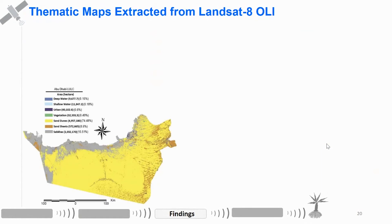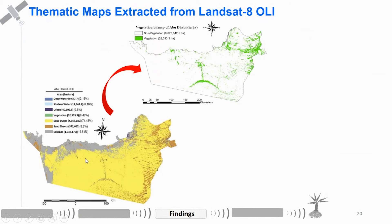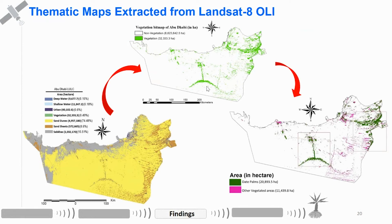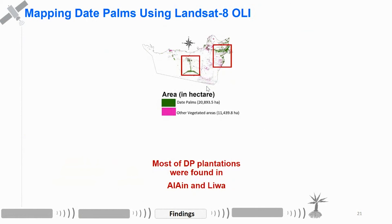This is the land use/land cover map of Abu Dhabi with seven classes. Then we recoded the non-vegetated classes to zero and vegetated classes to one, so we created the vegetation bitmap. Using the vegetated area, we ran again the hybrid classification — unsupervised and supervised — but here to classify the vegetated area into two classes: date palm and non-date palm, or other vegetated areas.